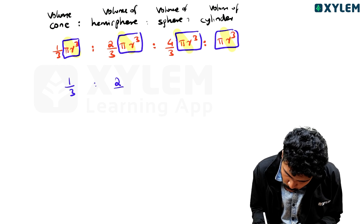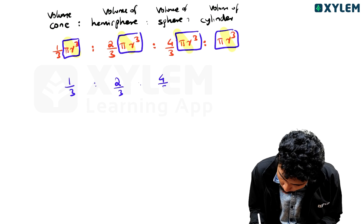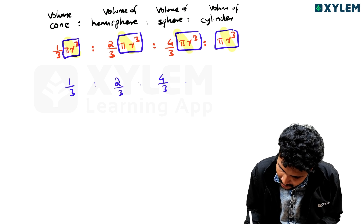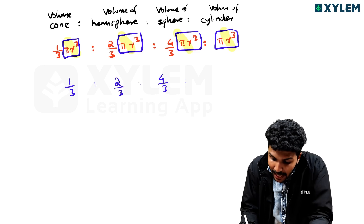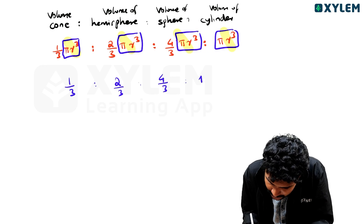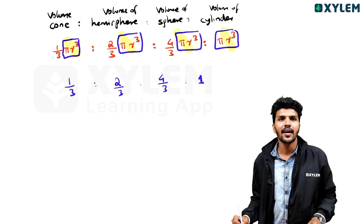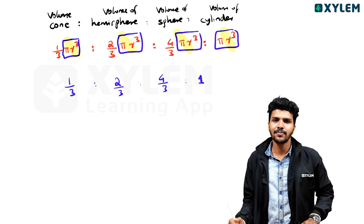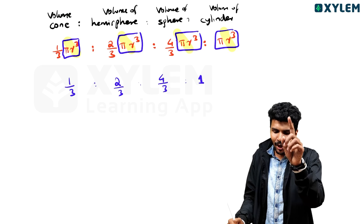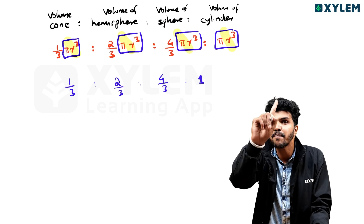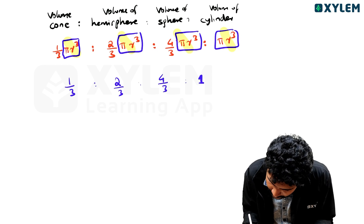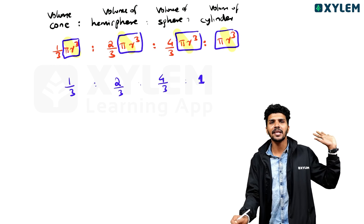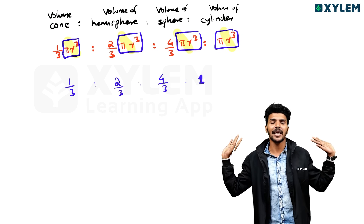Pi r cube comes out common. The fractions are: cone is 1 by 3, hemisphere is 2 by 3, sphere is 4 by 3, and cylinder is 1 (i.e., 3 by 3). So the ratio is 1 by 3 pi r cube.